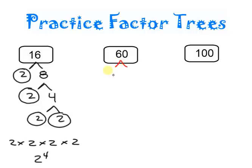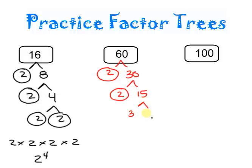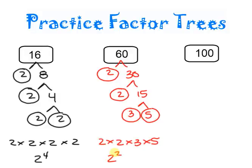Here I have 60. I like to start with 2 — sometimes 2 won't work, but here it does. 2 times 30 is 60. I can break 30 up by 2 as well: 2 times 15. Now 2 does not go into 15, but 3 does: 3 times 5. Both 3 and 5 are prime. So my answer is 2 times 2 times 3 times 5, or 2 to the second power times 3 times 5.